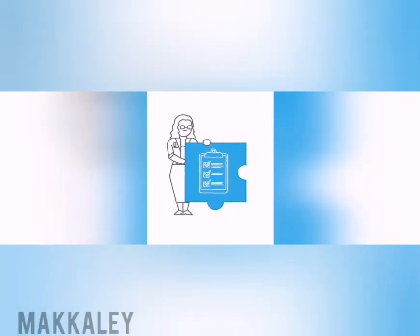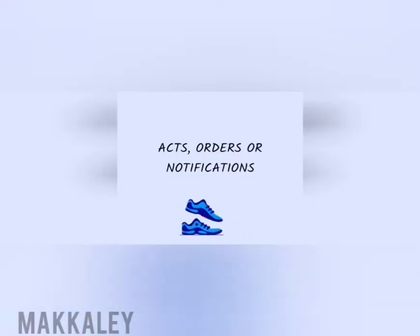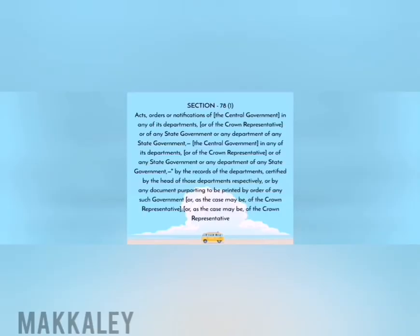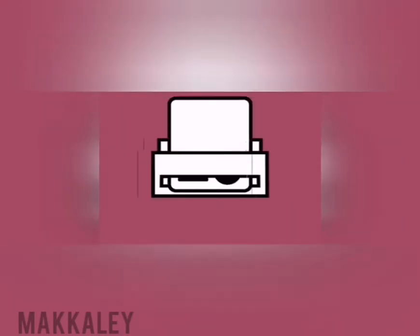Section 78 is very clear. Number one covers Acts, Orders, and Notifications — those of the Central Government or State Government, or orders under a particular Head of Department. We can get certified copies of these. If not, suppose the notification is in the official Gazette, we can get a copy of it.